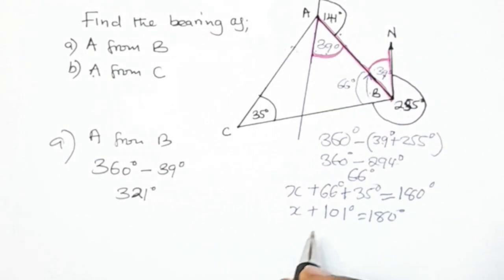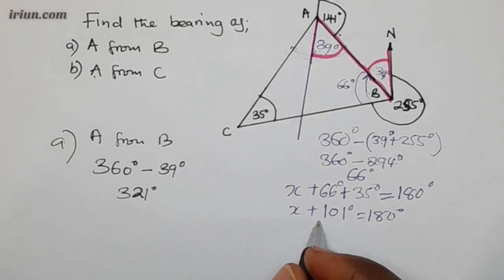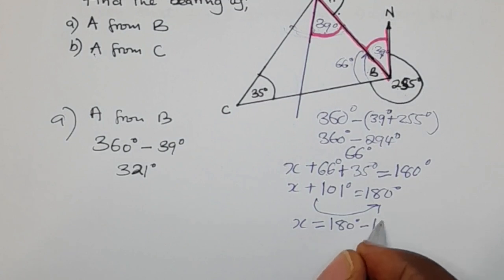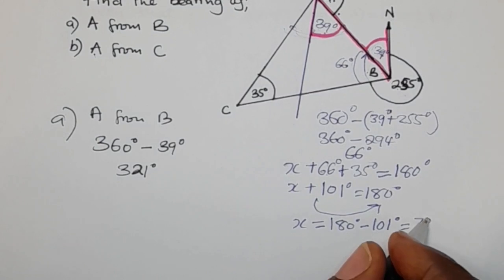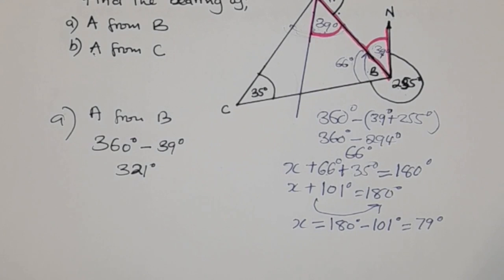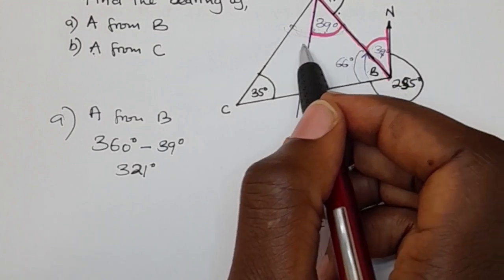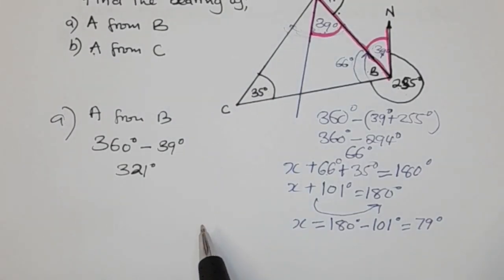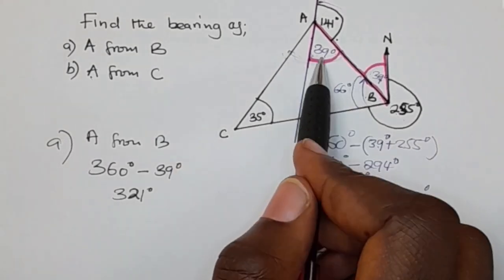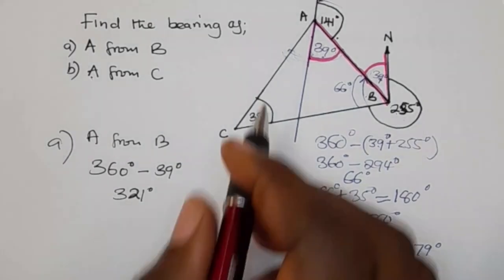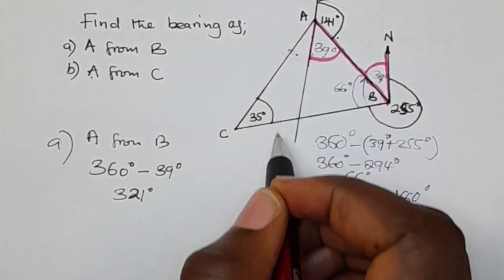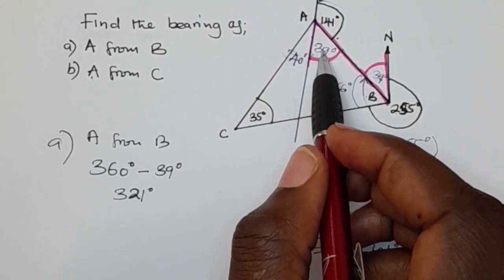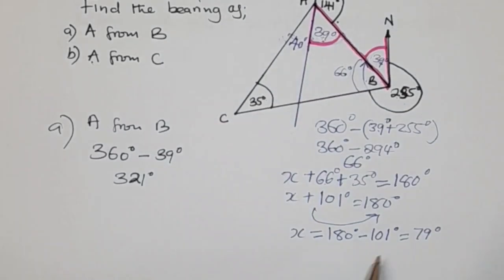So x equals 180 degrees minus 101 degrees, which gives 79 degrees. So the entire angle here is 79 degrees. But out of those 79 degrees, we already have 39 degrees, so we say 79 minus 39, which gives 40 degrees.